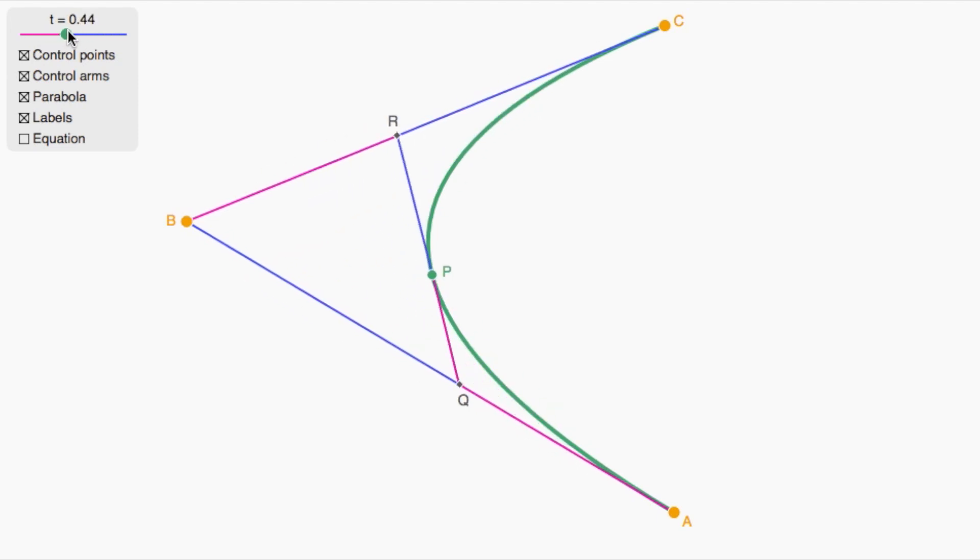That leads us to guess that if this point is a fraction t along this line segment, and this point is a fraction t along this line segment, that the touching point that we're after is that same fraction along this string art line.